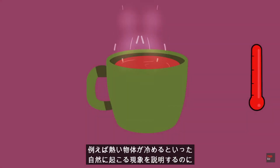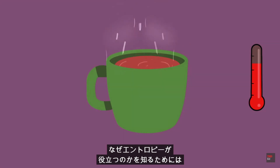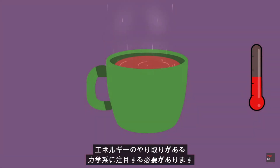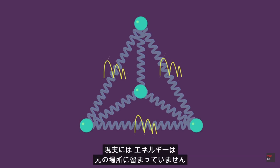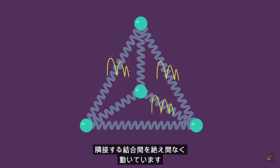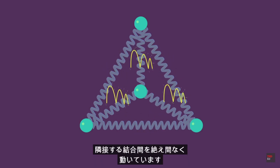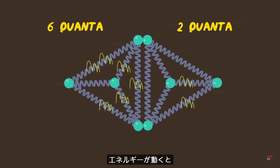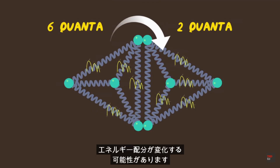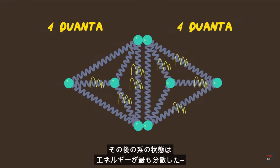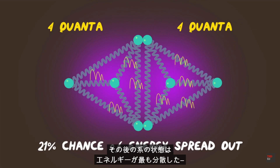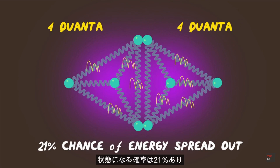To see why entropy is useful for explaining spontaneous processes like hot objects cooling down, we need to look at a dynamic system where the energy moves. In reality, energy doesn't stay put — it continuously moves between neighboring bonds. As the energy moves, the energy configuration can change. Because of the distribution of microstates, there's a 21% chance that the system will later be in the configuration in which the energy is maximally spread out.